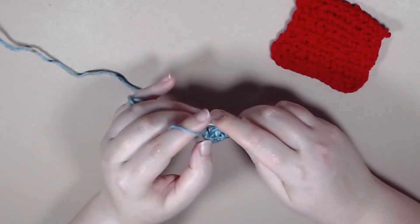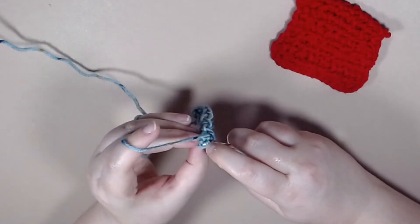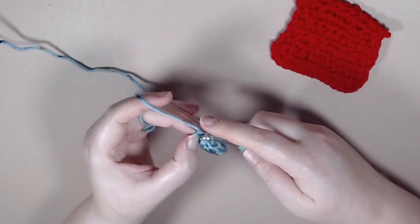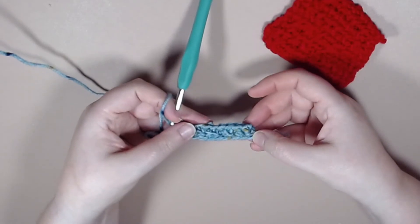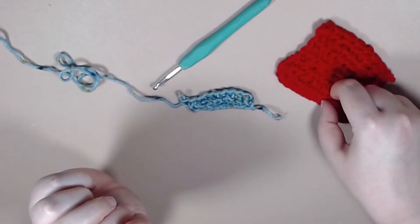So to finish off this row we'll do a front post single crochet. And then since there is no post to do a back post single crochet you just single crochet in the very last stitch to make sure that has a nice even edge. And there you have it. That's how you do the single crochet post rows stitch pattern.